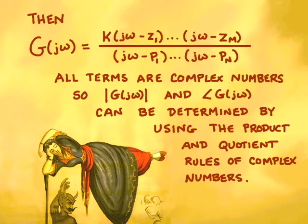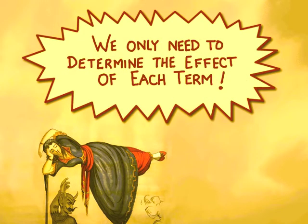To find the phase of a quotient of complex numbers, we simply find the phase of the numerator and subtract from it the phase of the denominator. So the phases won't present any problem either. We just need to figure out how each term in the numerator and denominator affects the magnitude and the phase of the transfer function, and then combine all the effects together. In the remainder of this lecture, we'll examine how left half-plane poles, left half-plane zeros, right half-plane poles, and right half-plane zeros affect the magnitude and phase curve of the transfer function.